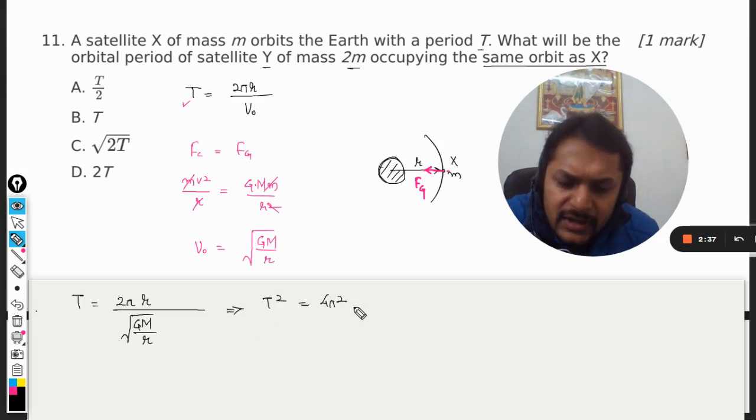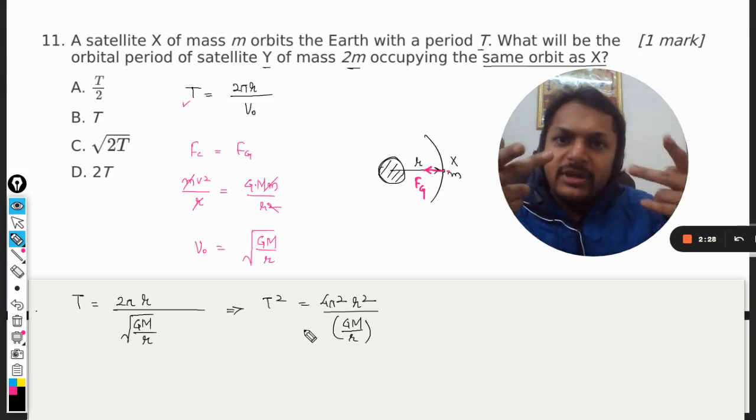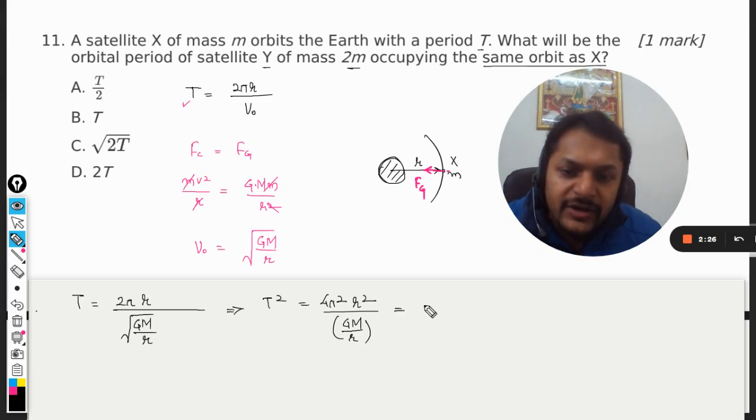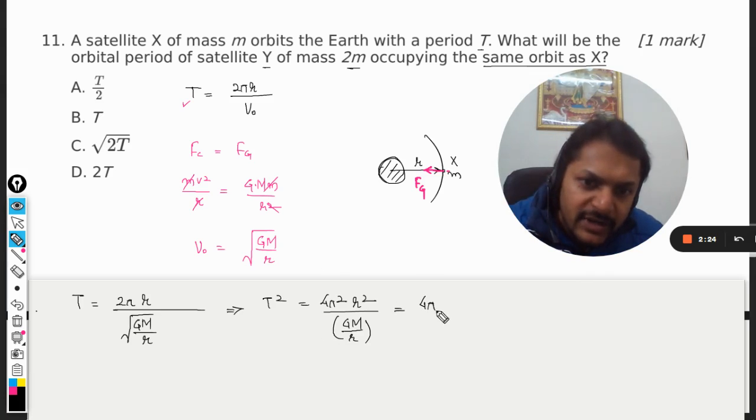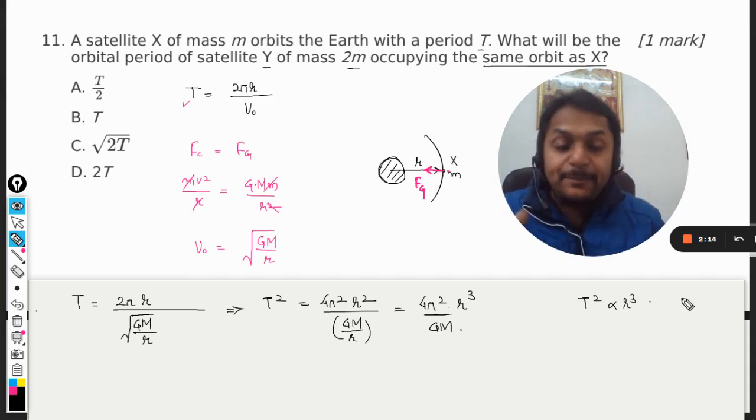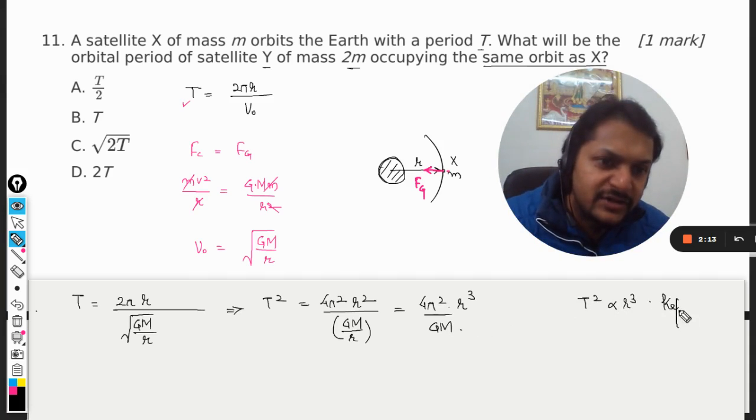And this square root will become GM by r, and now this denominator will be making reciprocal, so it will become 4π²r³ divided by GM. And there we have T² is directly proportional to r³. So you can see that Kepler's law is valid here, third law, Kepler's third law.